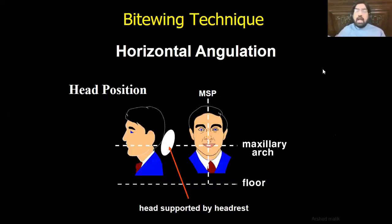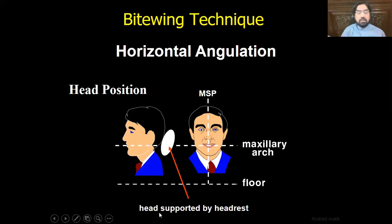While taking bite-wing X-rays, the mid-sagittal plane must be in a very straight line. The head should not be tilted forward, backward, right, or left. For both the maxillary arch and mandibular arch, when the mouth is closed, the occlusal plane should be parallel to the floor. The patient is supported by the headrest, and the occlusal plane of the maxilla runs in a straight line absolutely parallel to the floor. That is the alignment of the head for the bite-wing radiograph.